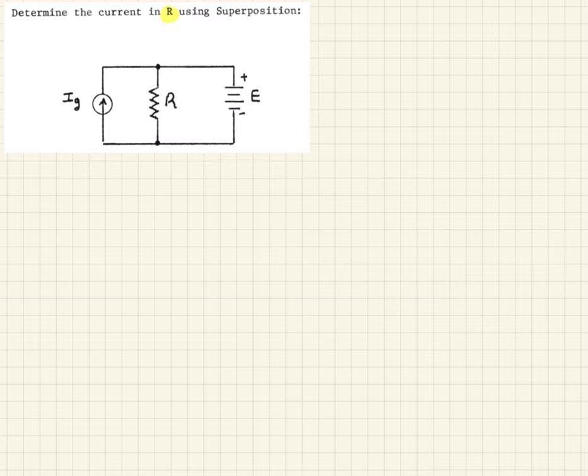So to do that we first would consider the current source here, this IG. And remember when we pick a source, any other sources on the circuit, voltage sources, we short out. And so this voltage source here we're going to short that out. And if we had any current sources we would open those circuits. So here we short that out.